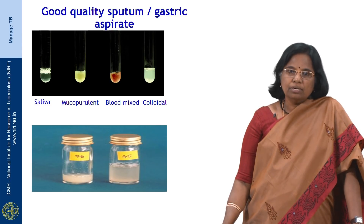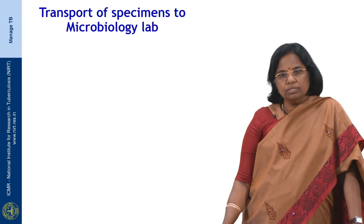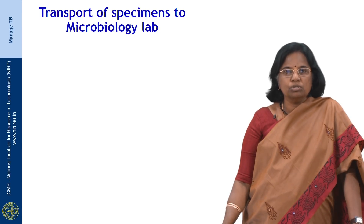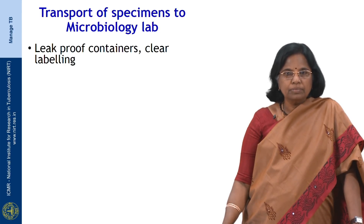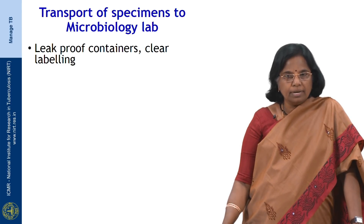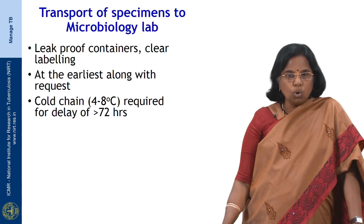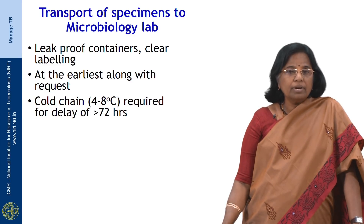This picture shows an ideal sputum sample and an ideally collected gastric aspirate. The second important factor for diagnosis of tuberculosis is the transport of specimens to the microbiology laboratory. Samples should be collected in leak-proof containers with clear labeling and sent to the laboratory at the earliest time point along with the request. A cold chain of 4 to 8 degrees C is required whenever a delay of more than 72 hours is expected.